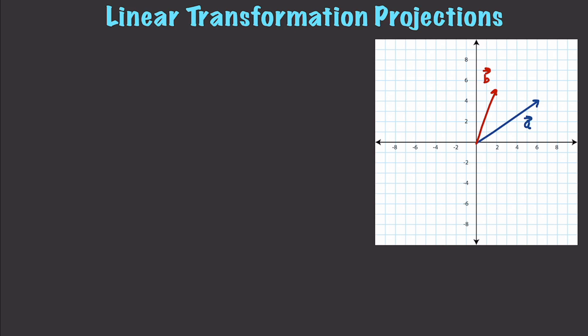We're going to draw a perpendicular line — a 90-degree right angle — dropping from B down to A. To find this individual point, we look for a constant C that minimizes the distance between B and A. That constant is given by vector B dot vector A over A dot A.